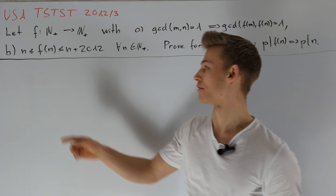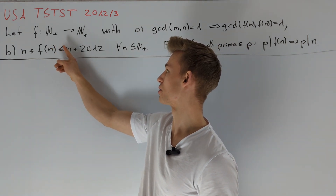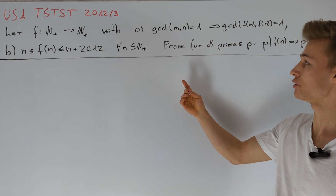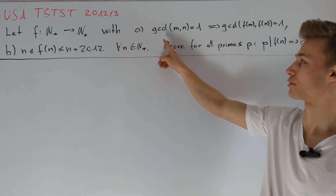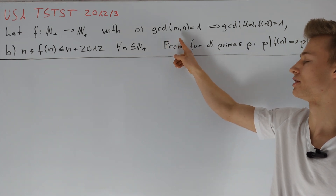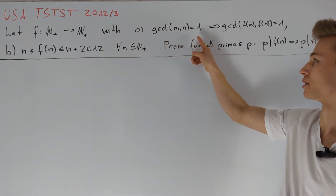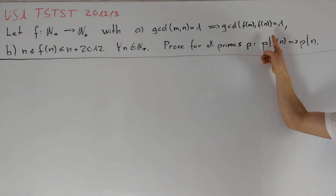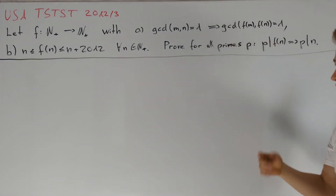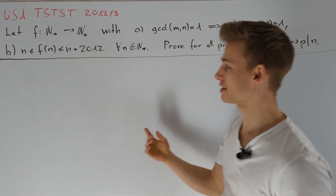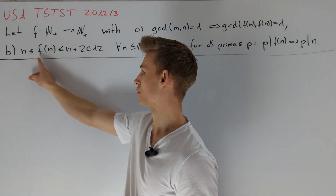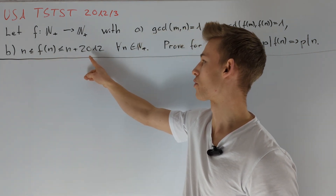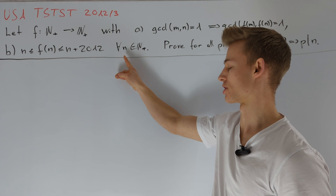We are given a function from the positive integers to the positive integers satisfying the following two conditions. First, if the greatest common divisor of two positive integers m and n is equal to 1, then f(m) and f(n) are also co-prime. The second condition is that n ≤ f(n) ≤ n + 2012 for all positive integers n.